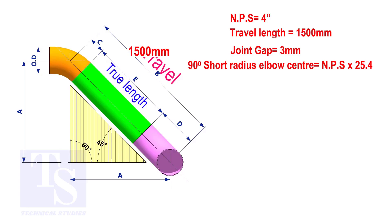To calculate the elbow center of a 90 degree short radius elbow, multiply the nominal pipe size by 25.4. The answer is 101.6 millimeters.